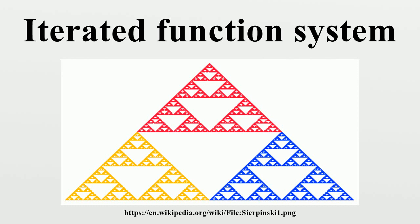Hutchinson showed that, for the metric space, such a system of functions has a unique, non-empty compact fixed set S. One way of constructing a fixed set is to start with an initial point or set S0 and iterate the actions of the phi, taking S(n+1) to be the union of the images of Sn under the phi, then taking S to be the closure of the union of the Sn. Symbolically, the unique fixed set has this property.